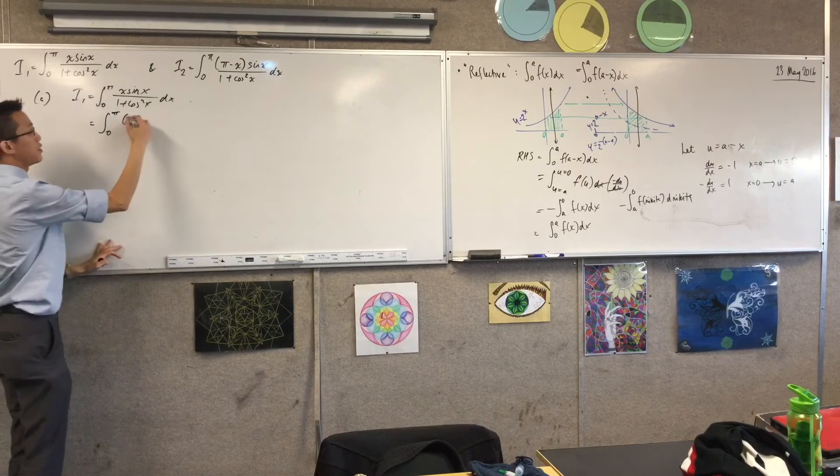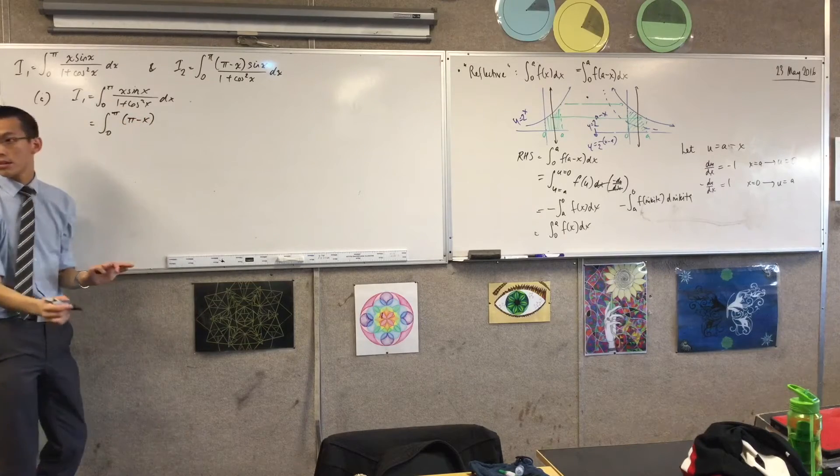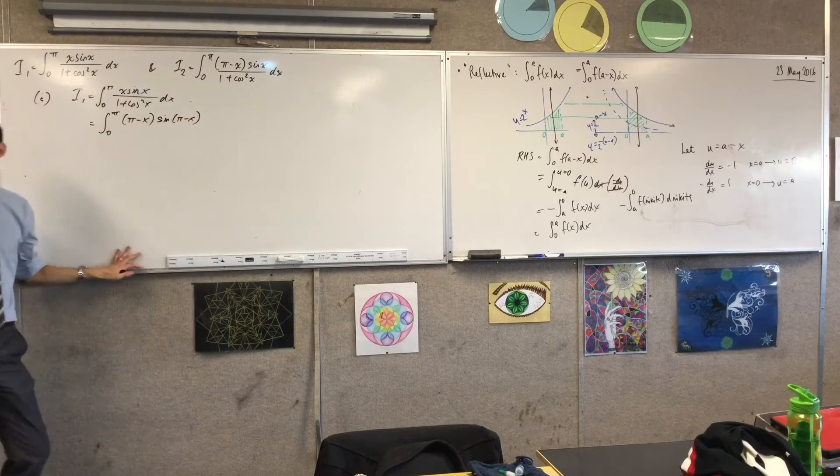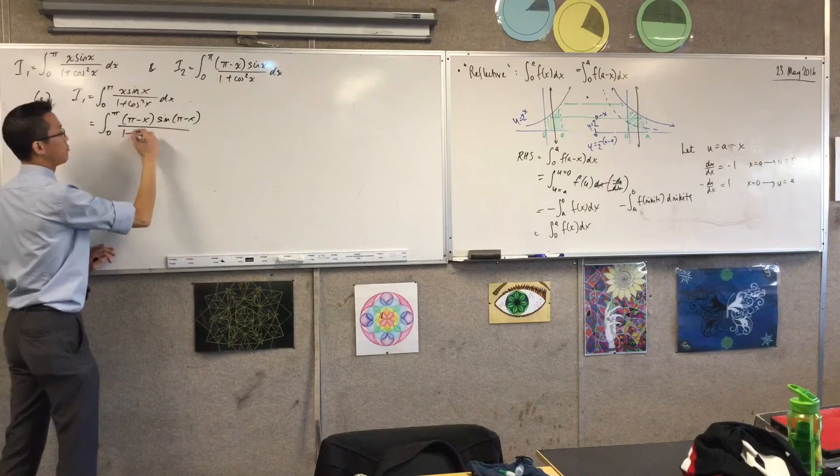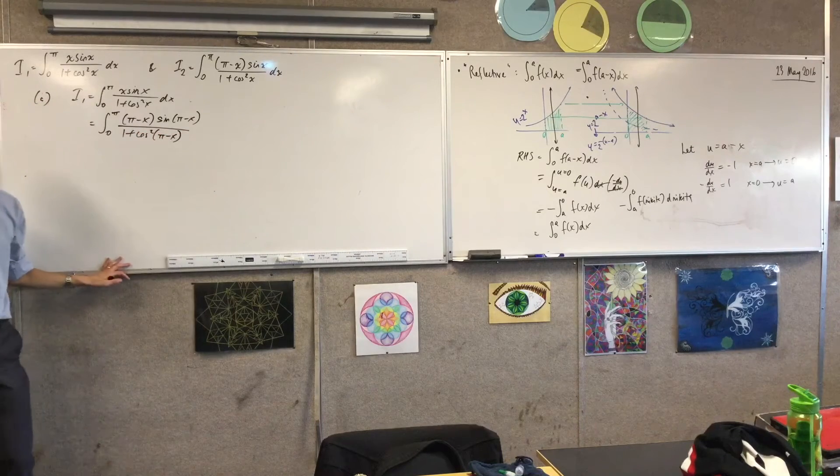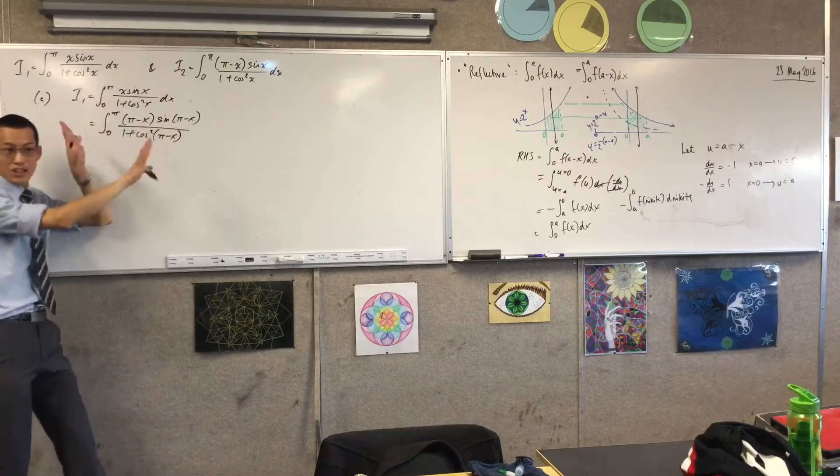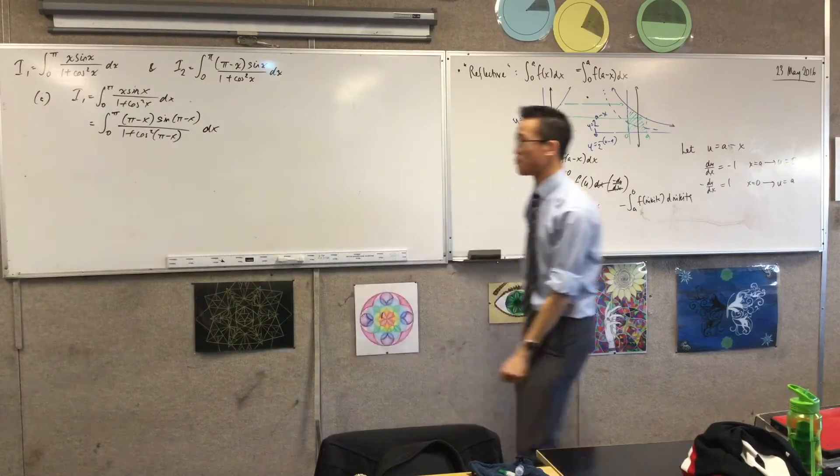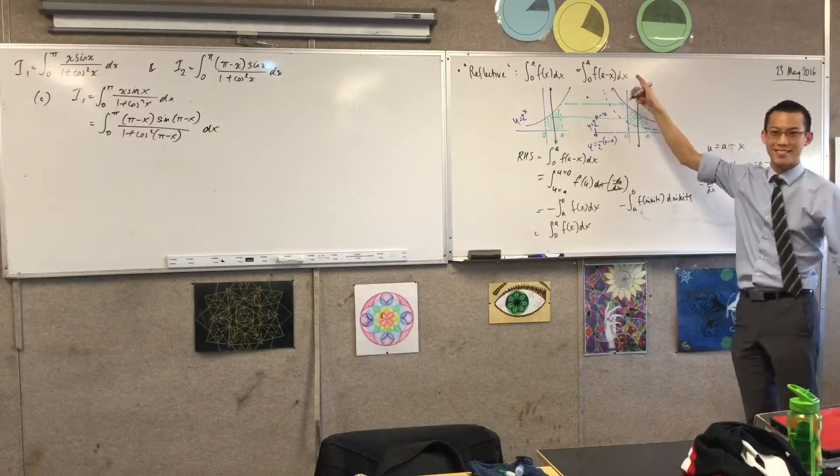Yeah so therefore this is going to become π minus x. All the x's become π minus x's and then you've got 1 plus cos squared π minus x. And that's all of the integrand changed. It's still with respect to the same variable. It's not with respect to π minus x thankfully.